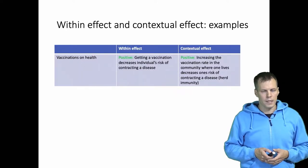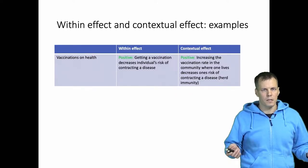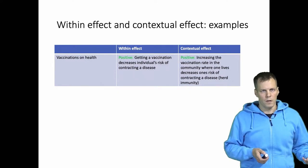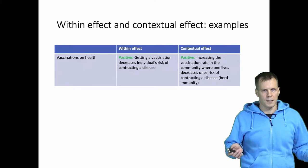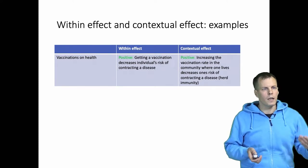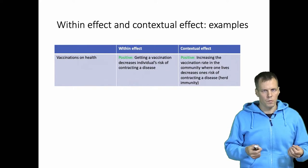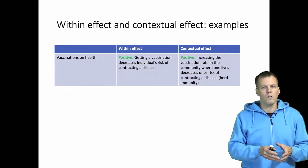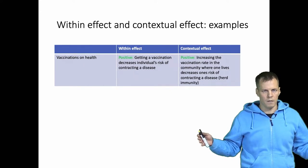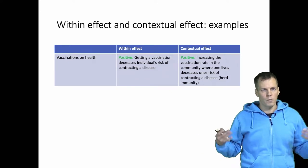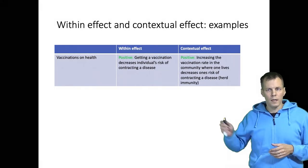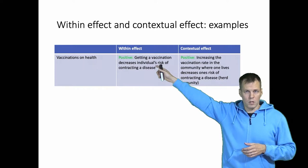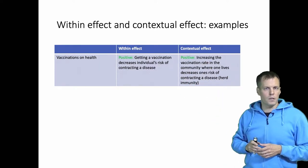Let's take a look at four examples. The first is vaccinations. If you vaccinate yourself then you're less likely to develop a serious disease, so there is a within effect — your vaccination helps you. But there's also a contextual effect because if others around you vaccinate themselves, that creates herd immunity which protects also those people who don't vaccinate. So the within effect here is positive and the contextual effect is positive as well.